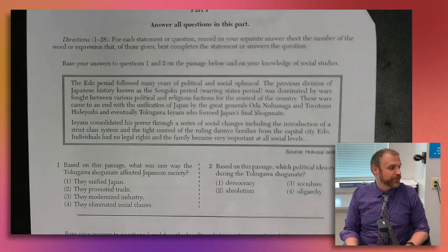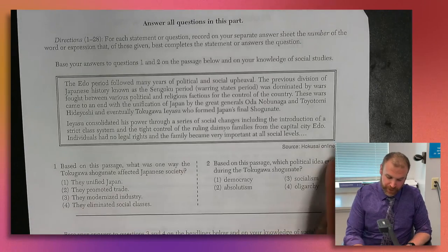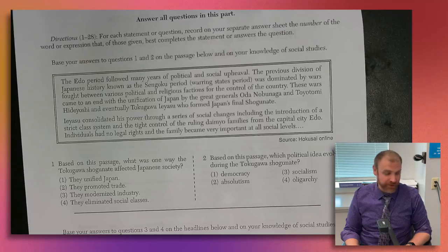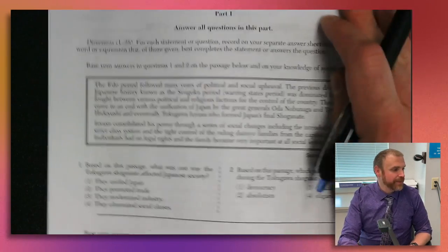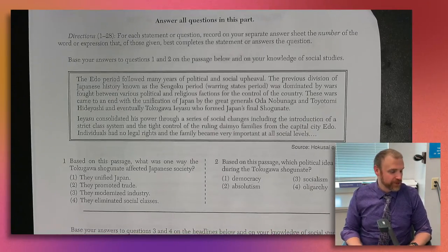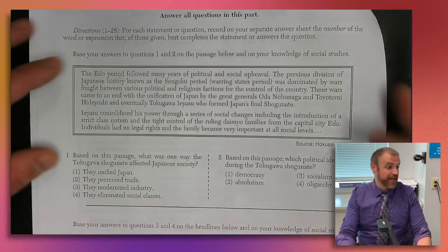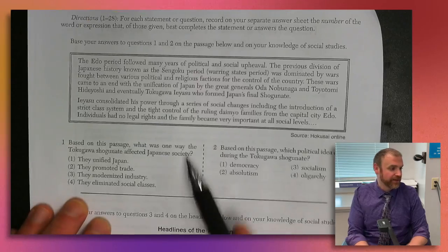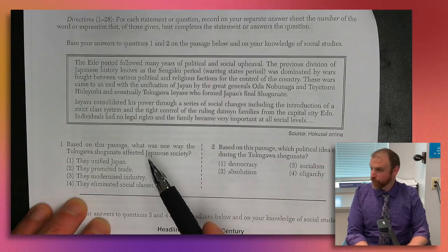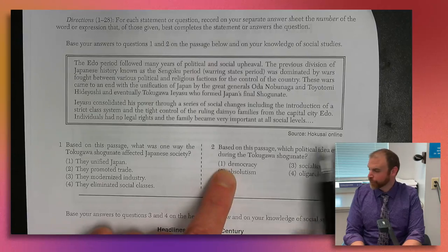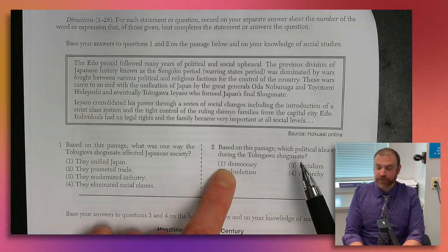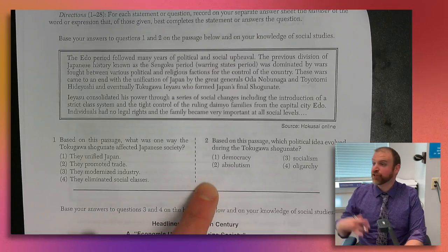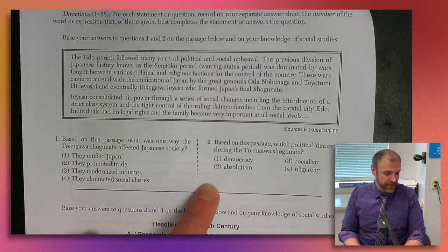I already know this first source is from the 1750 unit because it's talking about the Tokugawa period in Japanese history. Usually with the Regents, you get a reading and then a couple of questions. Often the first one you can get the answer right from the source, and then the second or third question asks you to make some other kind of connection — maybe a vocabulary term or something that resulted from the developments in the source.